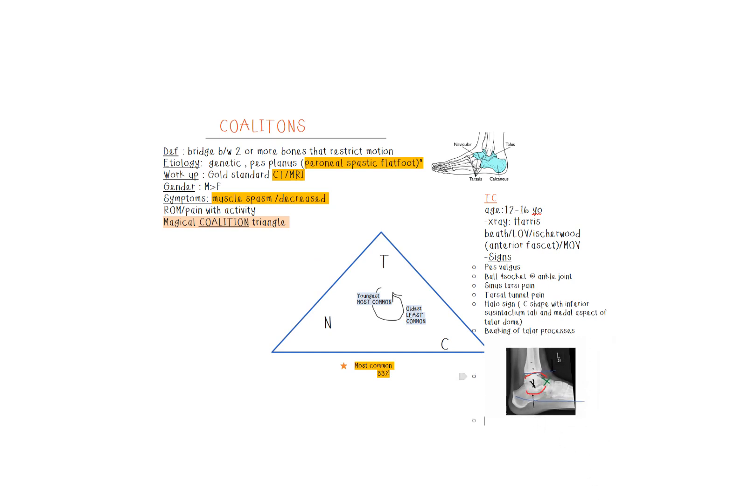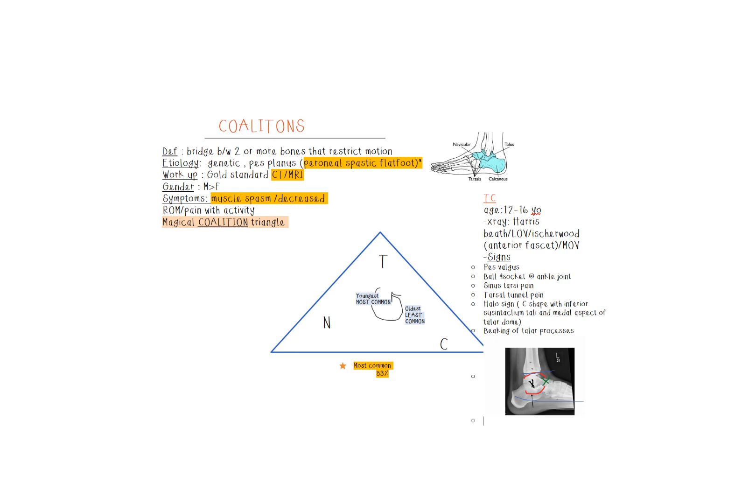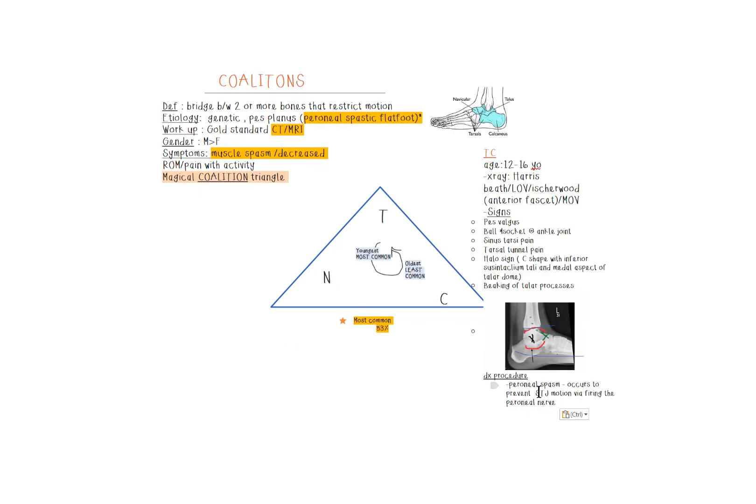Knowing me, I hate lists, so we're going to draw a picture. Here's a picture: blue line on the bottom is the flat foot, the other blue line is going to be the ball socket, the red line is the halo sign, the black X is the sinus tarsi pain, the green X is the talar beaking.